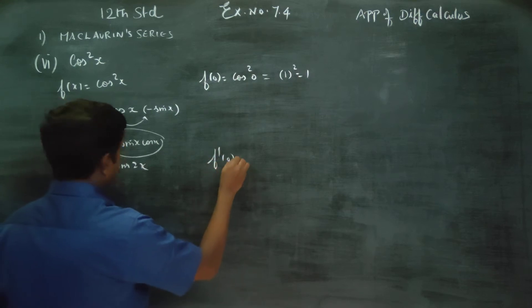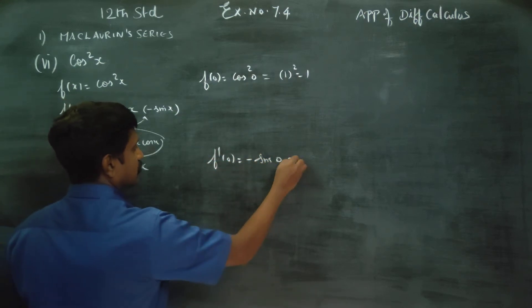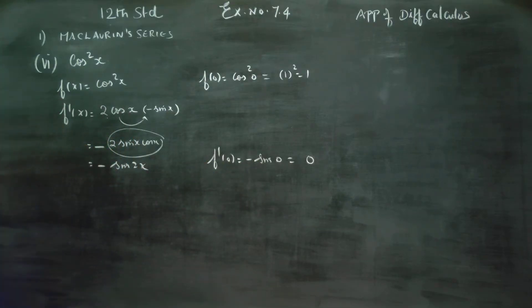F dash 0, minus 2 sin 0. Sin 0 is 0. 2 into 0 is 0, therefore sin 0 is 0.